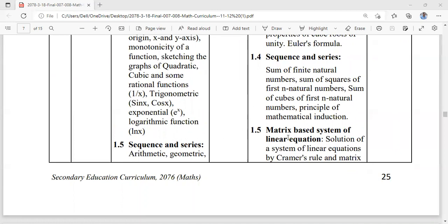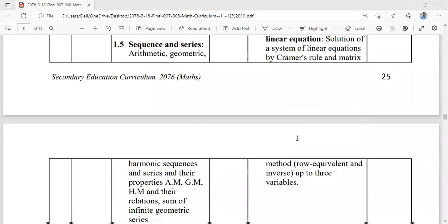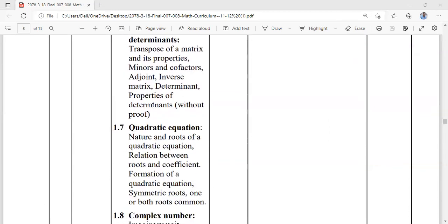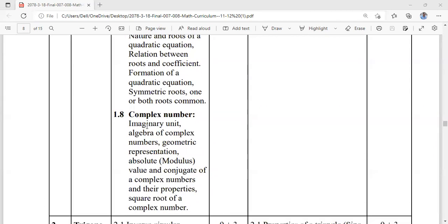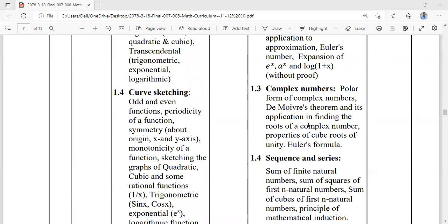For matrix-based system of linear equations, we use Cramer's rule, inverse matrix method, or row equivalent matrix methods. This covers matrix and determinant. We study transpose and properties, minors and cofactors, properties of determinants, and problem-solving related to matrices.